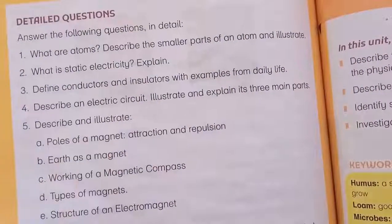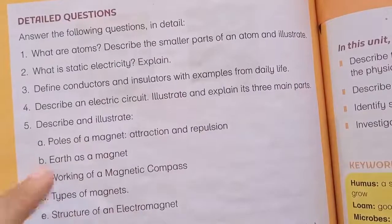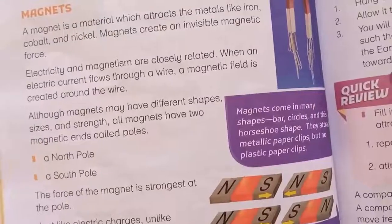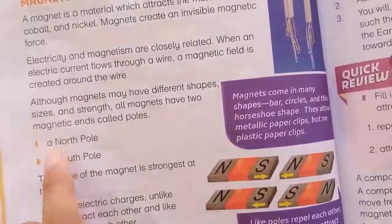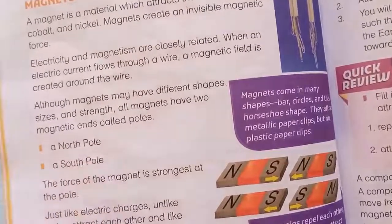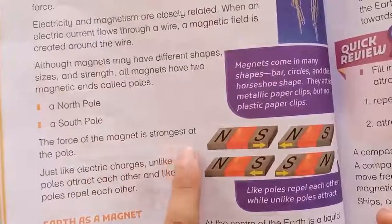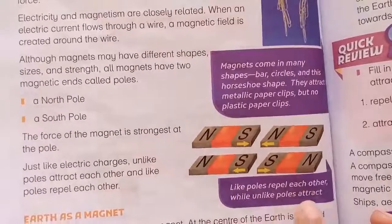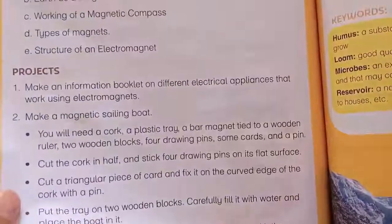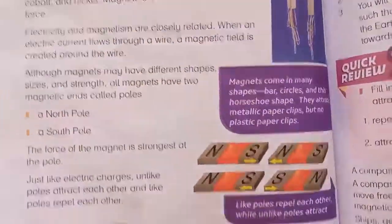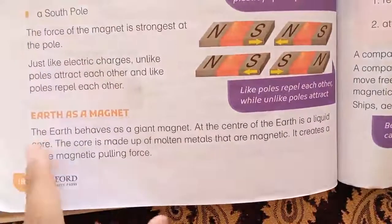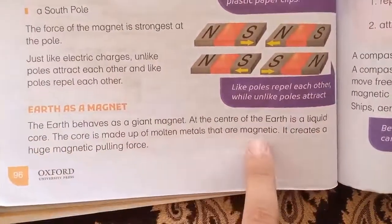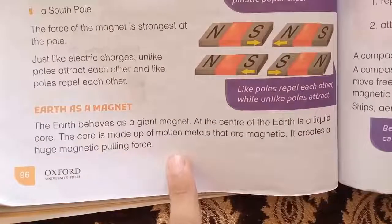Now we want to describe and illustrate the poles of a magnet and their attraction. The force of a magnet is strongest at its poles. Like poles repel each other and unlike poles attract each other. You need to make your diagram to show this. At the center of the Earth is a liquid core made of molten metal that is magnetic, and it creates a huge magnetic pulling force.